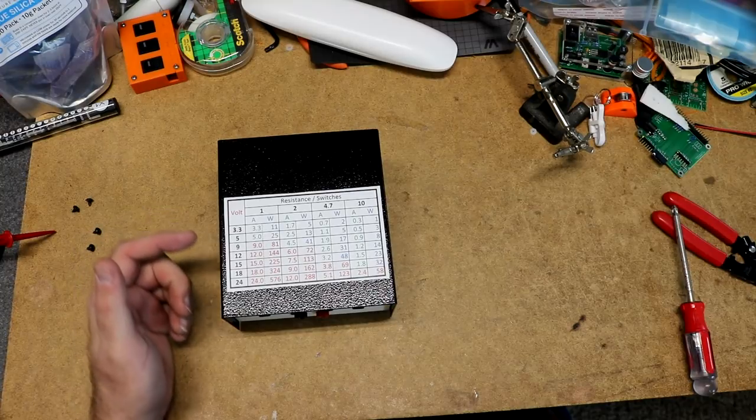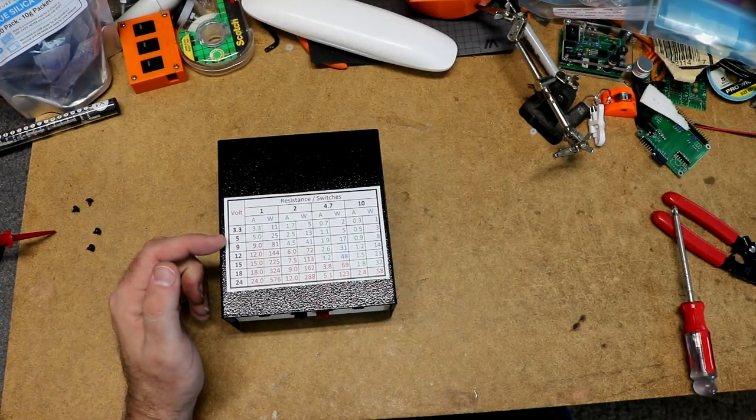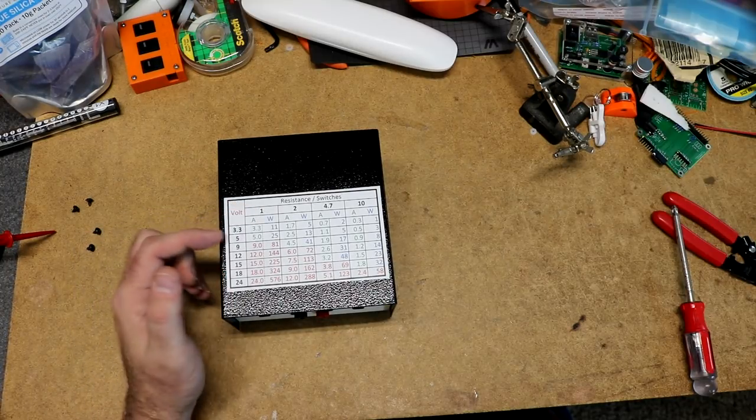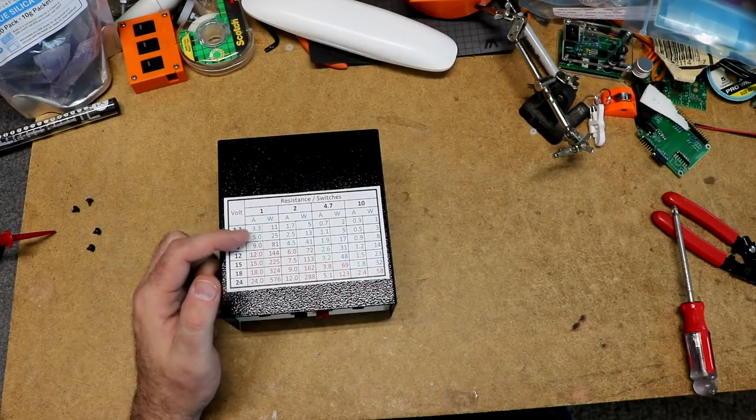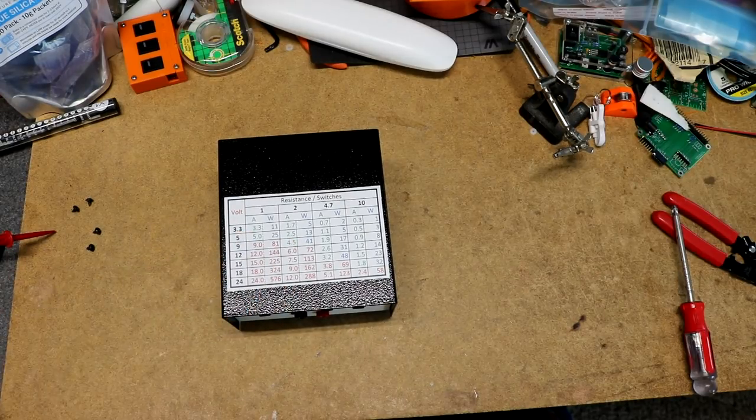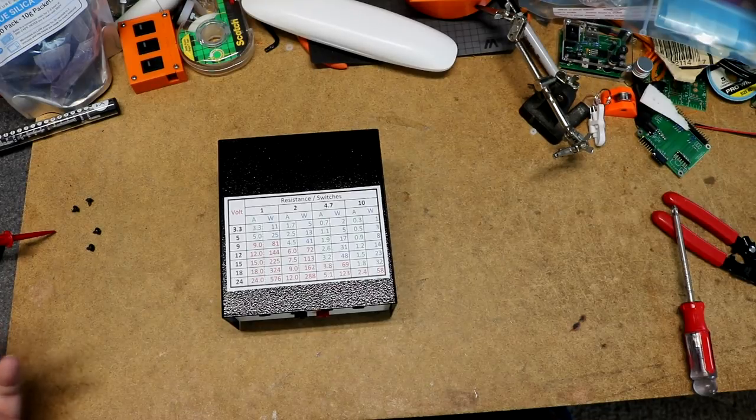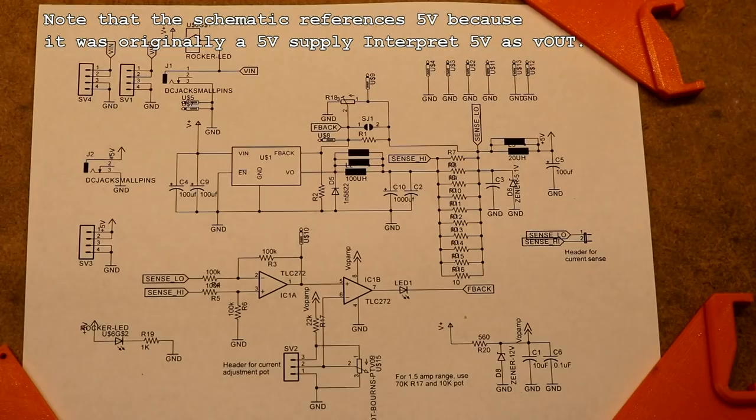So I printed this handy chart up and put it on the top. For example, if we go down to 5 volts, you flip on the first switch, it's the 1 ohm resistor, you'll get 5 amps. Flip on the second switch, you've got 2.5 amps, so put two of them on together, you've got 7.5 amps.